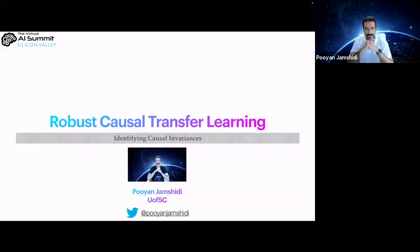Hello everybody, my name is Poojan Jamshiti and I'm an assistant professor at the University of South Carolina. Today I'm going to talk about Robust Causal Transfer Learning, which is about identifying causal invariances across environments.